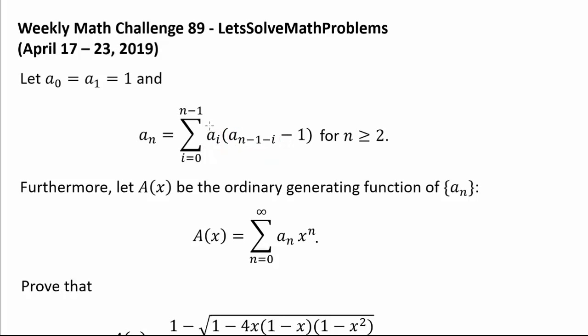Now, the second part of the summation, aᵢ times 1 is pretty elementary by itself. So we may think of splitting up the summation into two parts. So we can say a_n is the sum from i equals 0 to n minus 1 of aᵢ times a_(n-1-i) minus the sum from i equals 0 to n minus 1 of aᵢ. So I'm just distributing aᵢ and splitting up the summation.